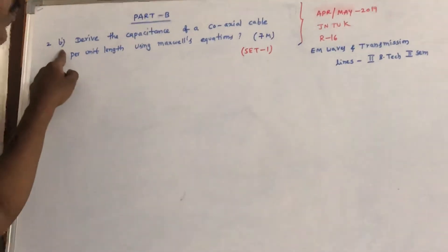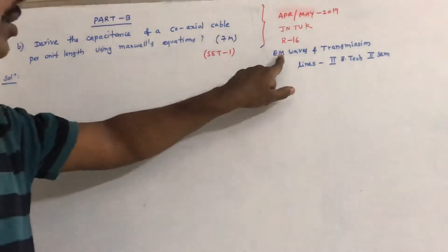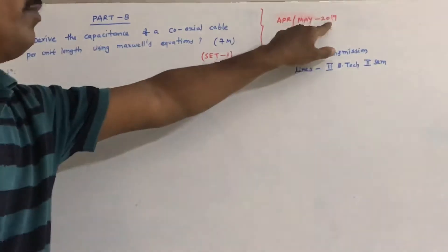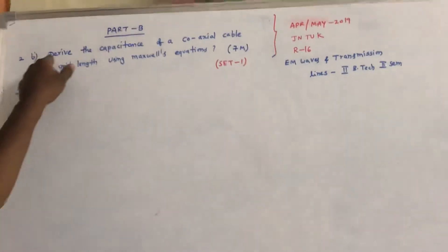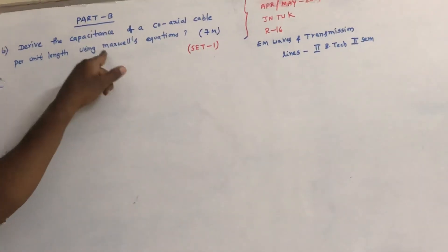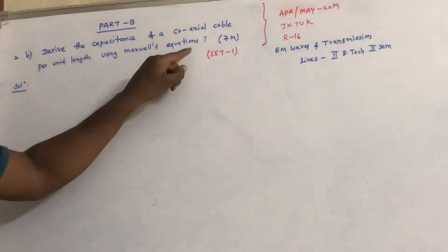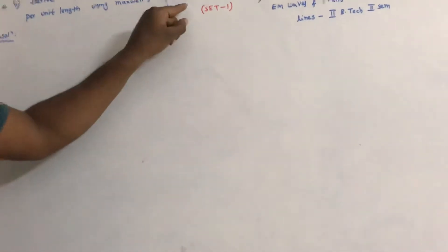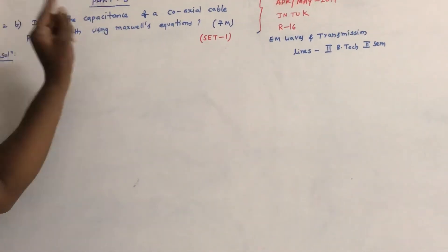This is question 2B from part B of EM Waves and Transmission Lines for second B.Tech second semester, April 2009 previous paper, J into K, R16 regulation, set 1. The question asks to derive the capacitance of a coaxial cable per unit length using Maxwell's equation. Note that no Maxwell's equations are actually required to derive this capacitance — it was mentioned in the question by mistake.